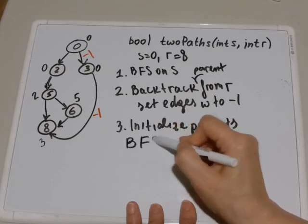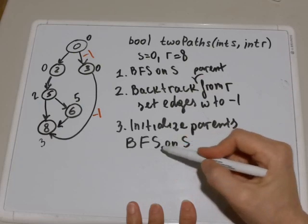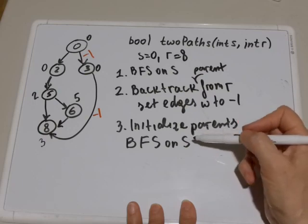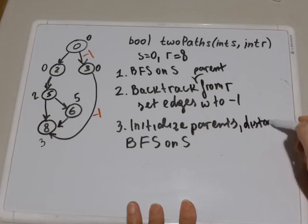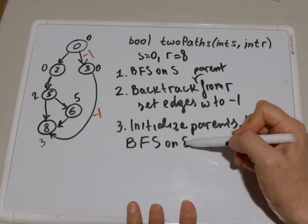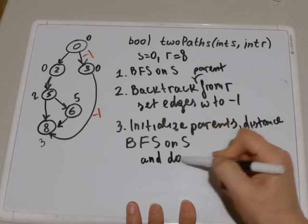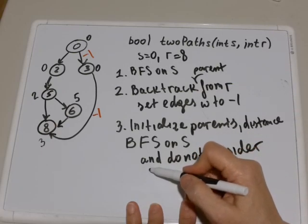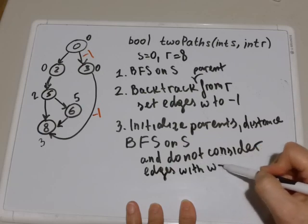So you run BFS on s again, but this time when you run BFS on s, you need to make changes to the code of BFS, making sure that you check two conditions. First of all, you check if distance is equal to infinity. And second of all, you need to check if weight of that edge is not negative 1. Only then you put the child into the queue. So two conditions: you run on s and do not consider children or neighbors whose weight is negative 1. Do not consider edges with weight equal to negative 1.